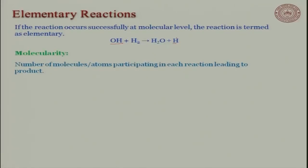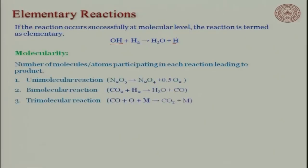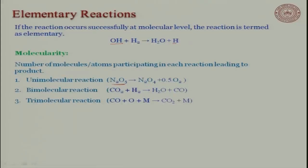In molecularity, basically the number of molecules or atoms that participate in each reaction leading to a product. Let us consider some reactions which are unimolecular — for example, N2O5 is decomposed into N2O4 and oxygen. In this case the molecularity for this reaction is only one, that is why we call it unimolecular. For bimolecular reactions, if we consider CO2 reacting with hydrogen going to water and carbon monoxide, two molecules are participating leading to a product, so we call it bimolecular. For trimolecular, of course three molecules will be reacting to get into the product.